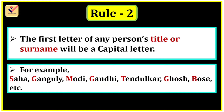In Shaha, S is capital. In Ganguly, G is capital. In Modi, M is capital. In Gandhi, G is capital. In Tendulkar, T is capital. In Ghosh, G is capital. In Bosch, the first letter B is capital.